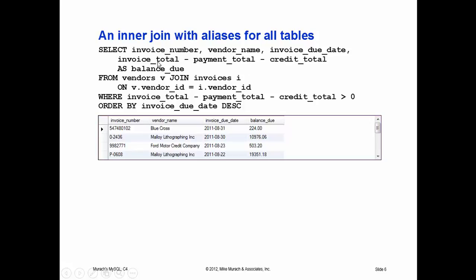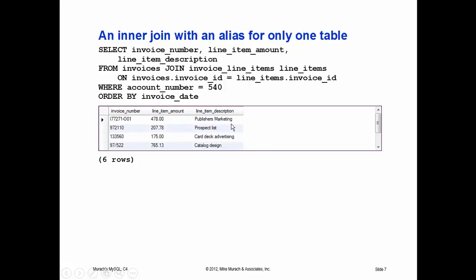So we could say SELECT i.invoice_number, v.vendor_name, i.invoice_due_date, i.invoice_total minus i.payment_total minus i.credit_total AS balance_due. You don't have to alias all tables — in some examples they've only aliased one table. You never have to alias your tables, but sometimes doing that results in a lot less typing, that's all.